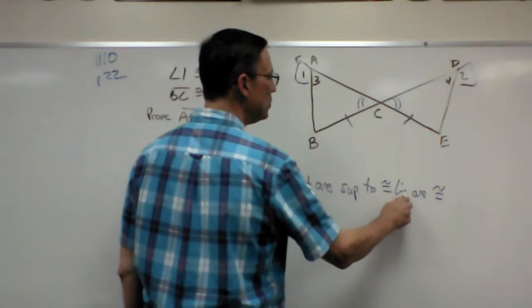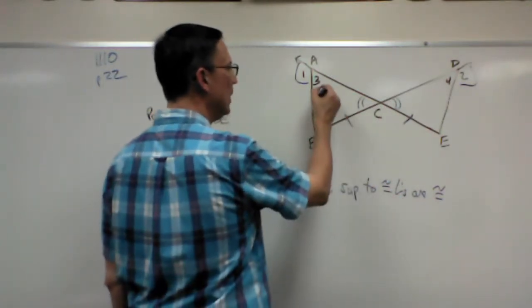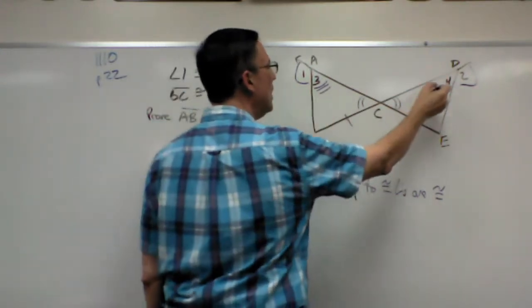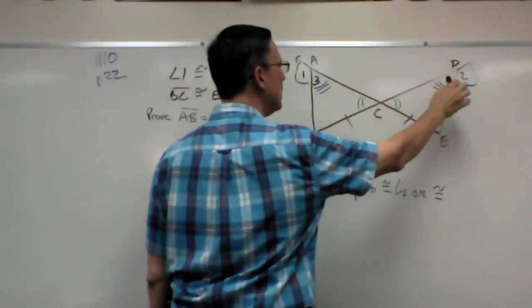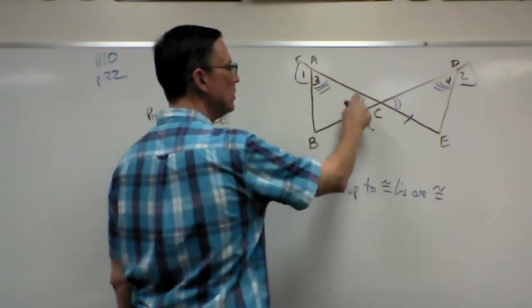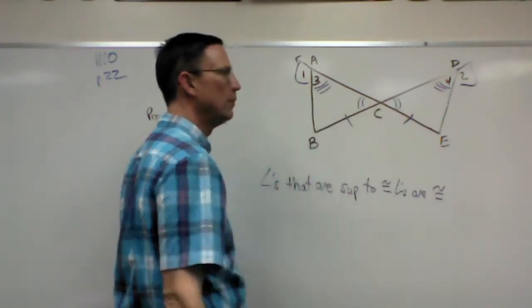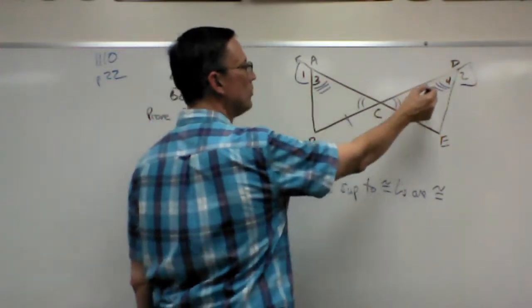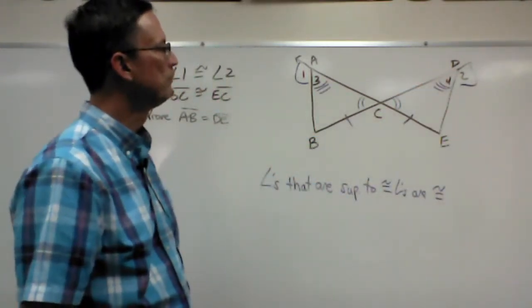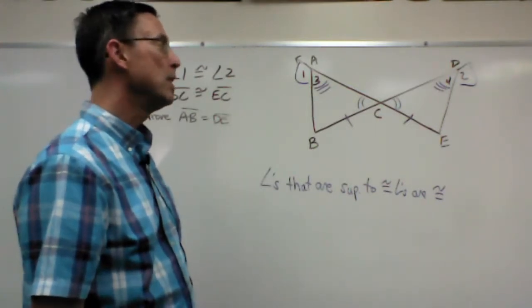So if angles that are supplementary to congruent angles are congruent, then which two angles are congruent? Well, I would say this angle here, I'm going to use triple arches because we already used a single arch here, we used two to indicate the vertical, so I'm going to use three arches to indicate that those angles are congruent.